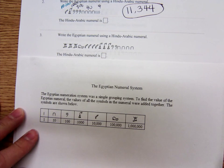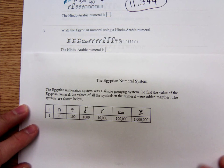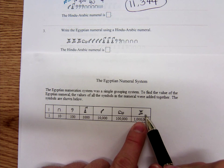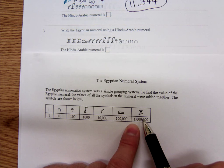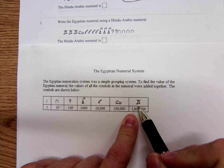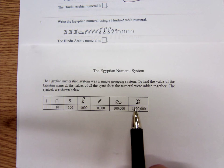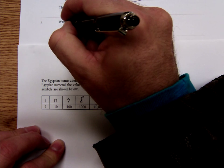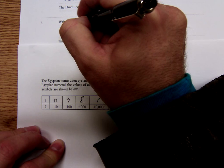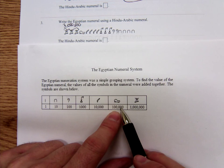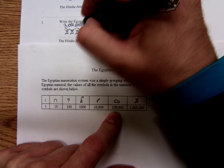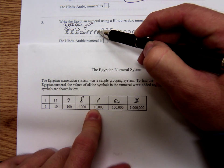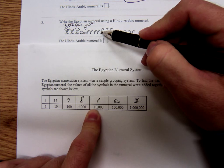Here's another one. Write this Egyptian numeral using our Hindu-Arabic number system. This one's going to be a big one because we have three of these 1,000,000 symbols. So that would be 3,000,000. Then one of these that looks like a whale — that's 100,000. And 1, 2, 3, 4 of these little marks — each one is 10,000 — so 40,000.